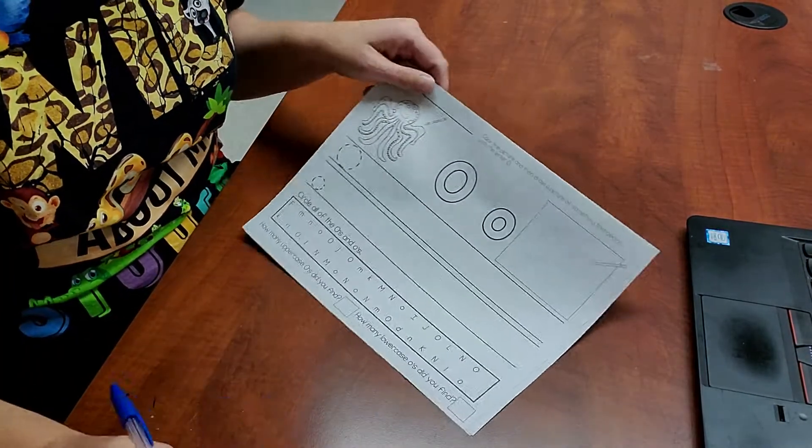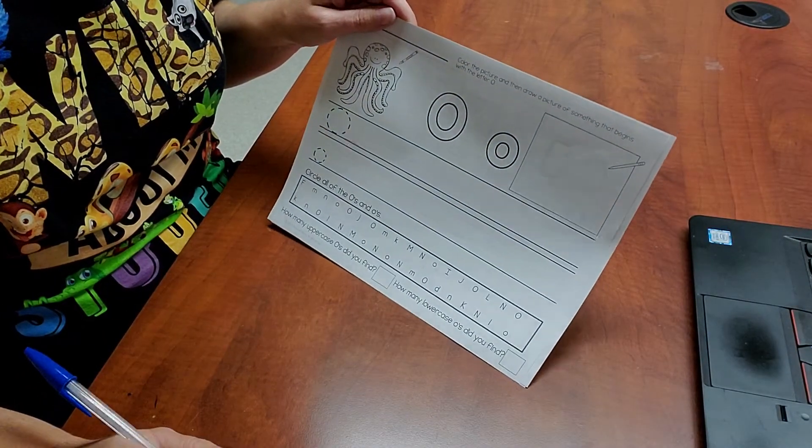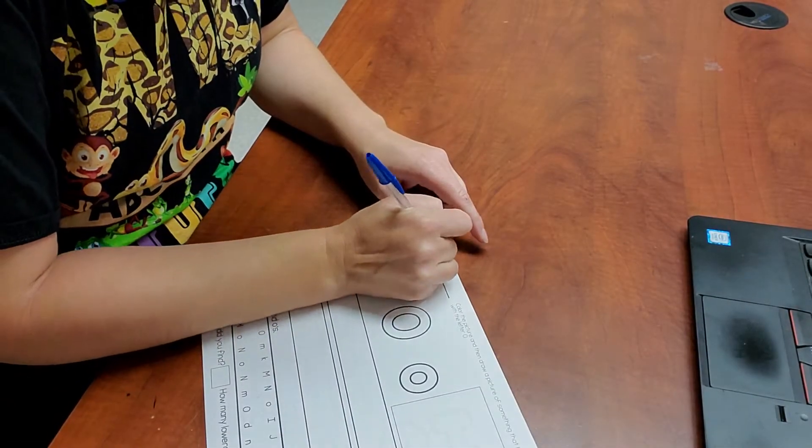Hello, my friends. All right, let's go ahead and do our worksheets. We're going to start with our letter O worksheet. Write your name at the very top.